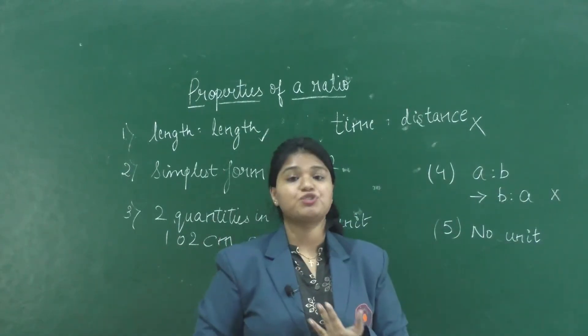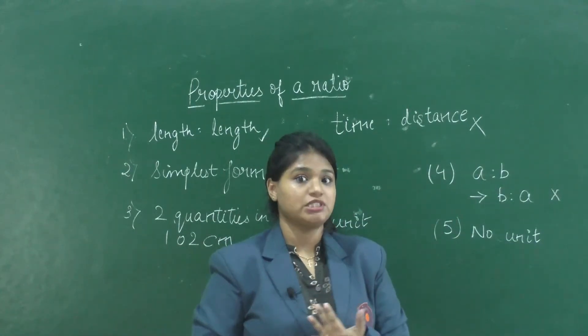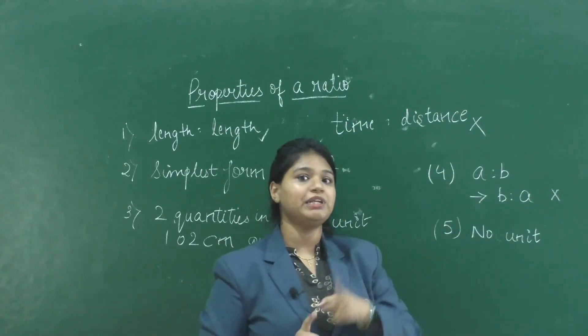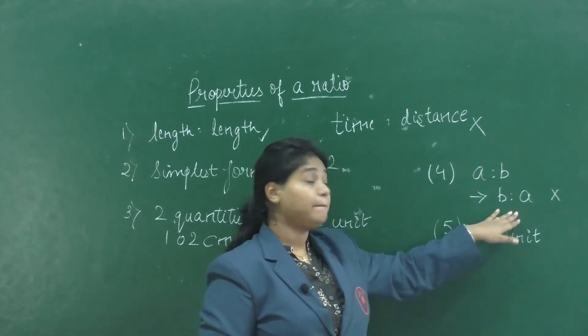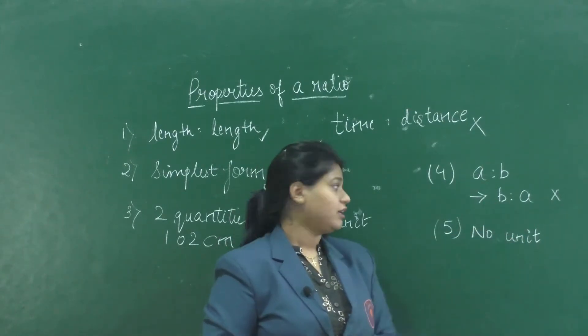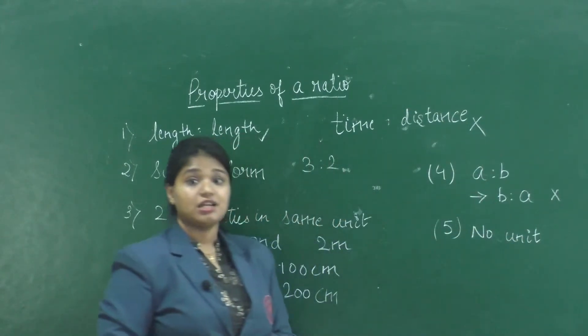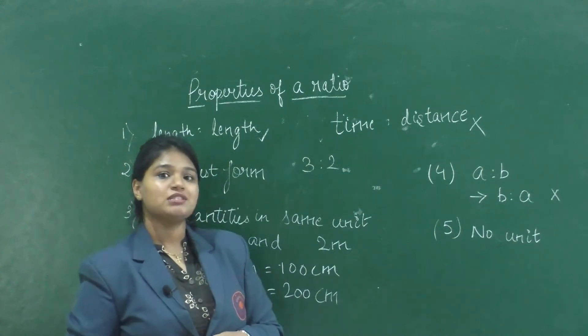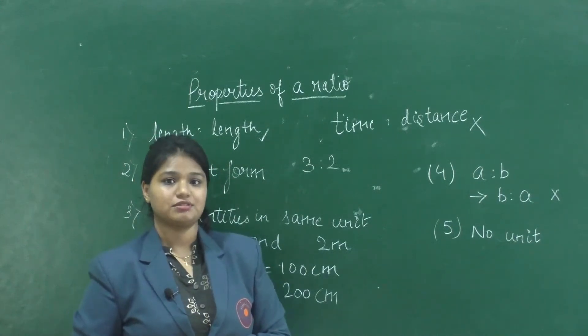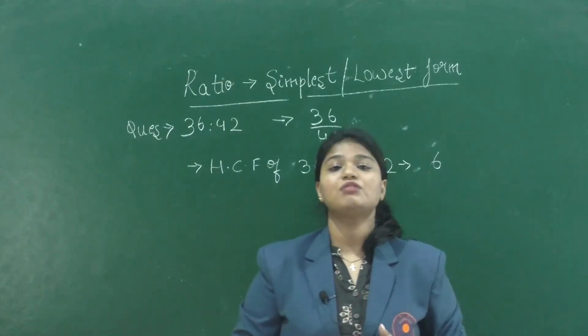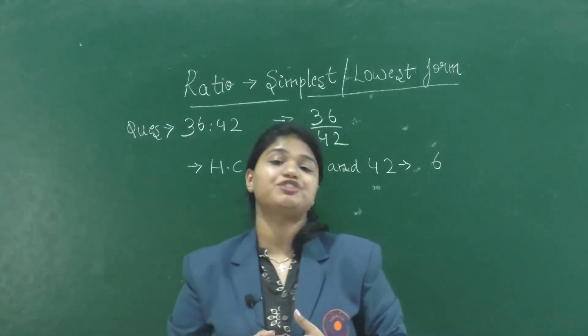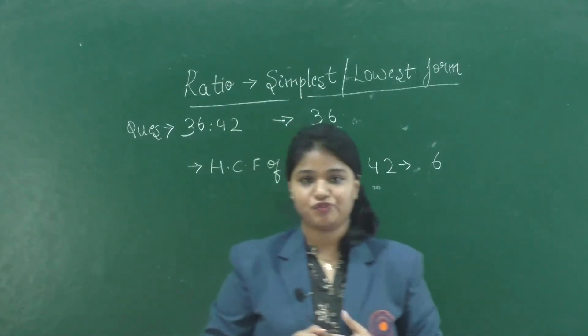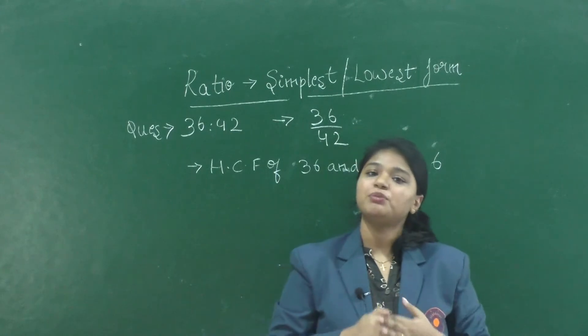The fourth property: the order in a ratio is very important. The ratio a is to b cannot be written as b is to a. The last property: a ratio has no unit.